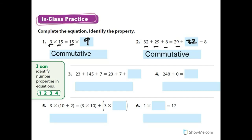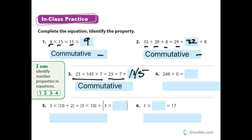Looking back at the key concept chart, I can see which property to use. I want you to do problems three, four, five, and six on your own using that chart. Number three has a missing number — it's 145 — and it's commutative. Notice that problems one through three are all commutative: multiplication, addition, and addition.